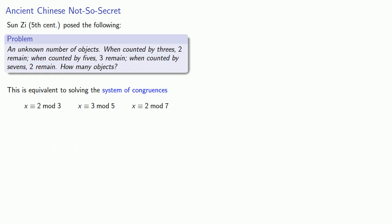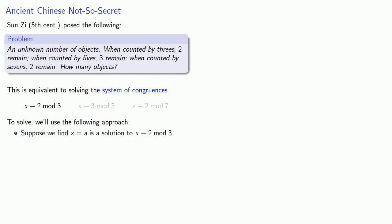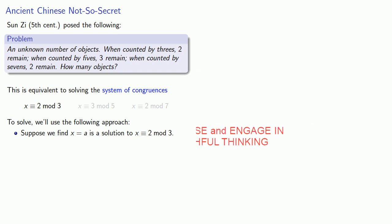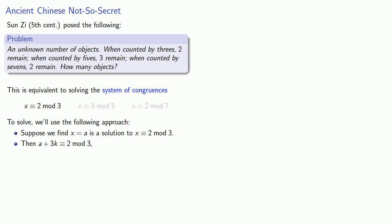Sun Zhi's solution is a bit hard to follow, and so to solve this, we'll use the following approach. First, we'll do something that we often do whenever we're facing a hard problem: we'll ignore most of the problem. Suppose we find x equals a as a solution to x congruent to two mod three. Then a plus three k will be congruent to two mod three, and so a plus three k is still a solution to x congruent to two mod three.